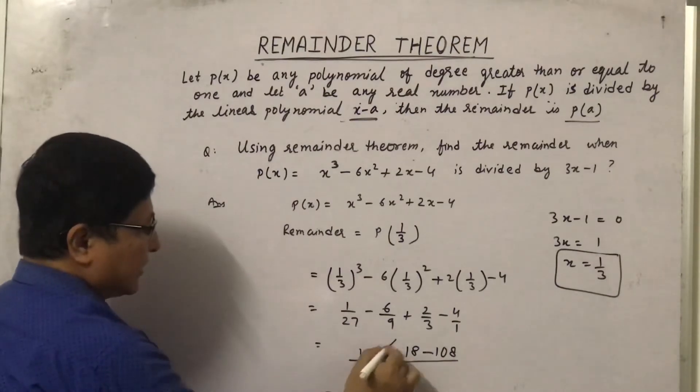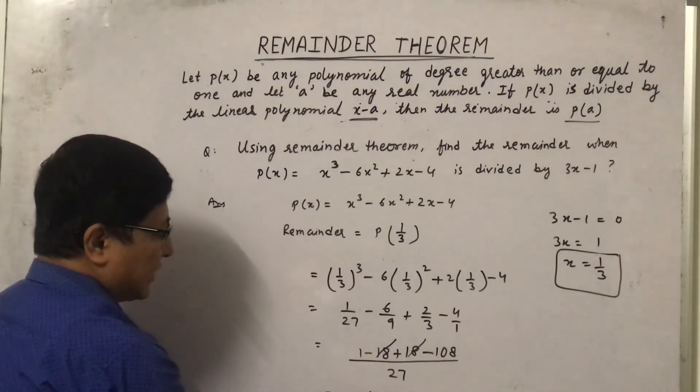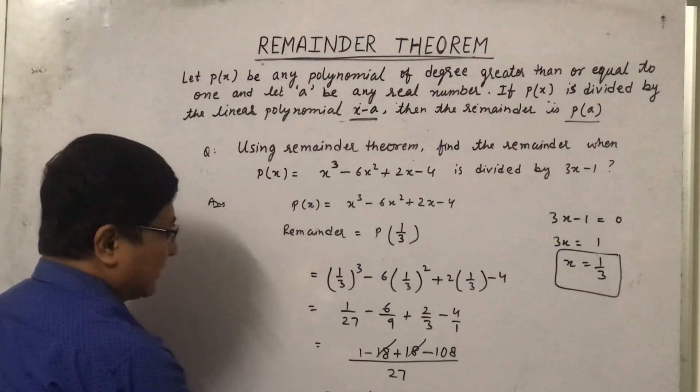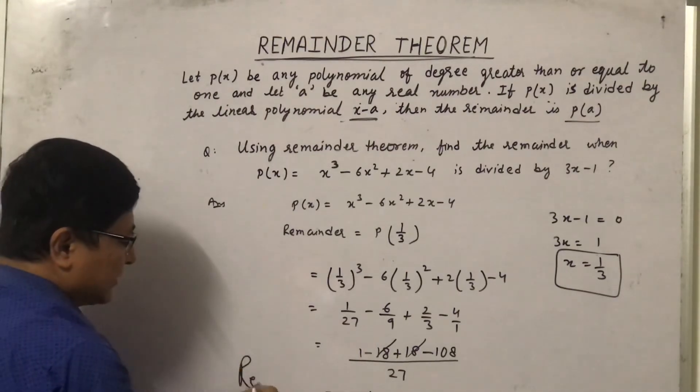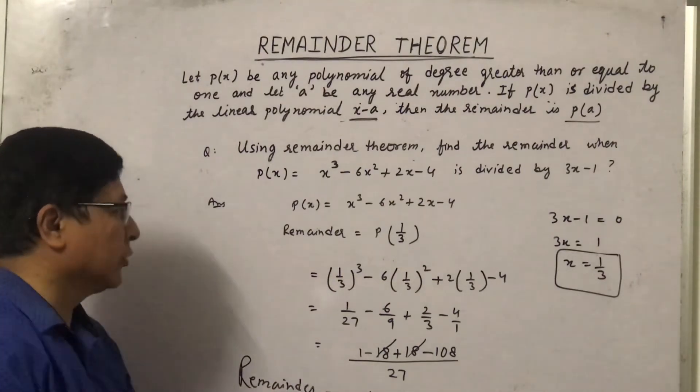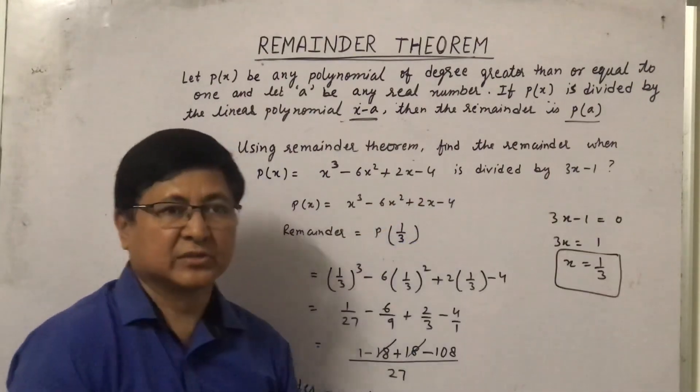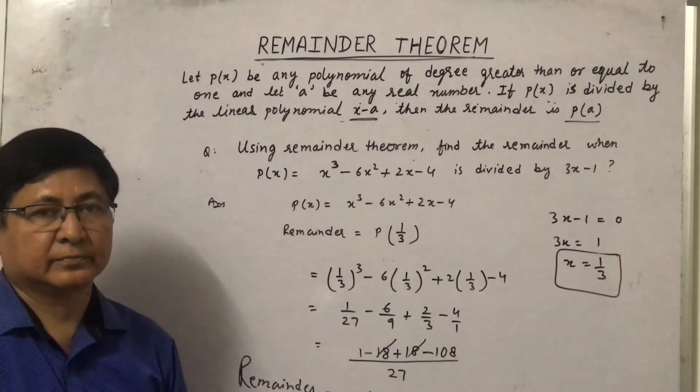Now let us solve this. This and this will cancel. 1 minus 18 plus 18 minus 108 will become -107/27, so the remainder is -107/27 when this polynomial is divided by 3x - 1.